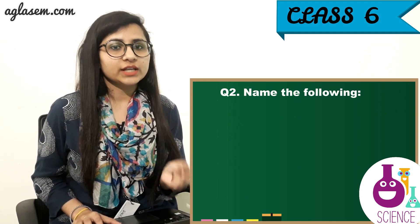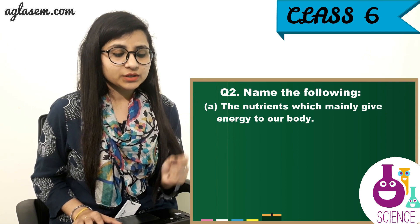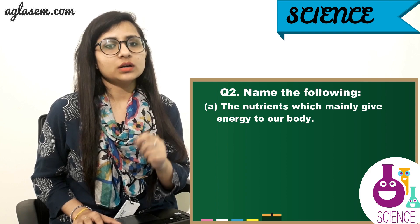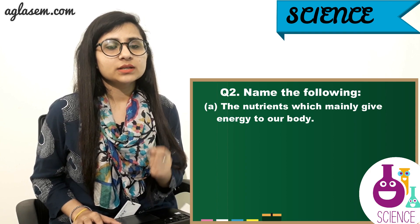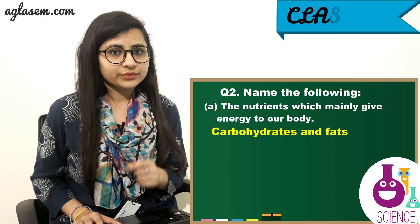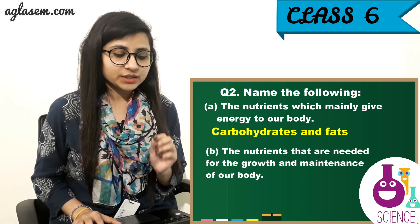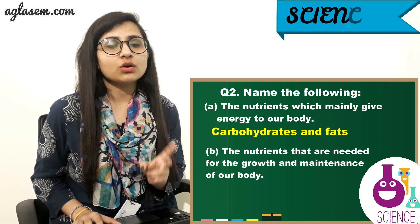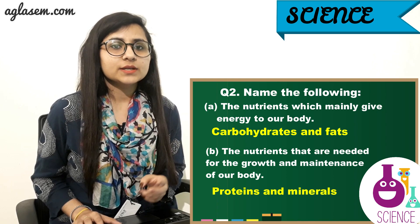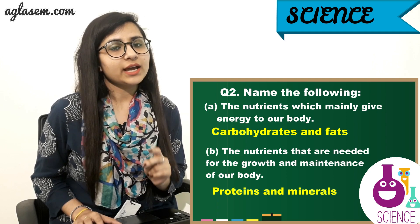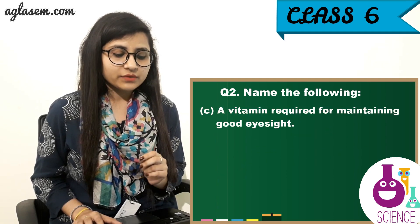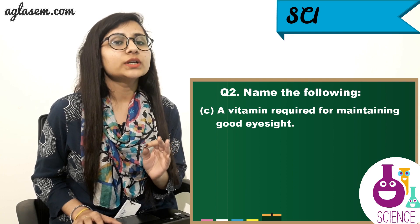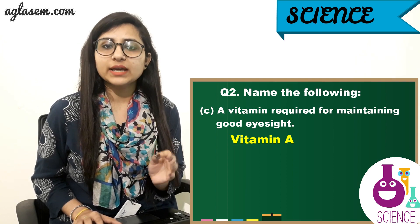Question number 2: Name the following. A) The nutrients which mainly give energy to our body. The answer is carbohydrates and fats. B) The nutrients that are needed for the growth and maintenance of our body. The answer is proteins and minerals. C) A vitamin required for maintaining good eyesight. The answer is Vitamin A.